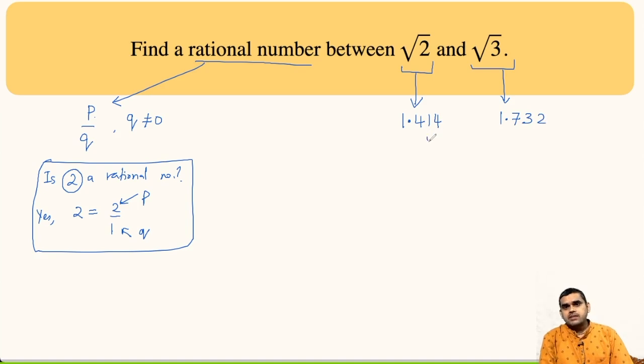So, in between 1.414 and 1.732, there will be infinite numbers. So, you have to find only one rational number. So, what I can do is I can take any number which is more than 1.414 and less than 1.732.